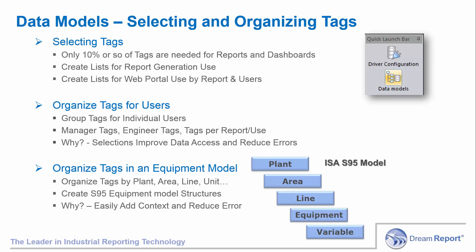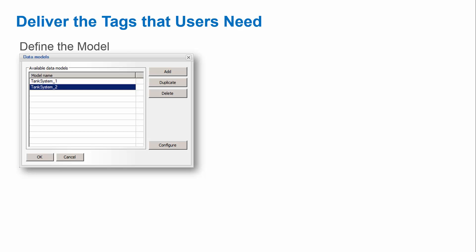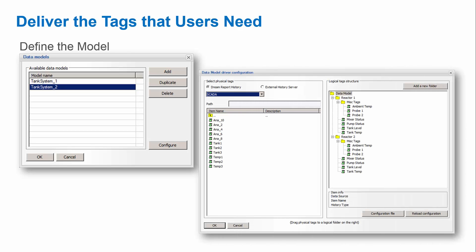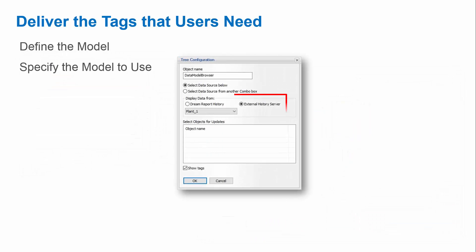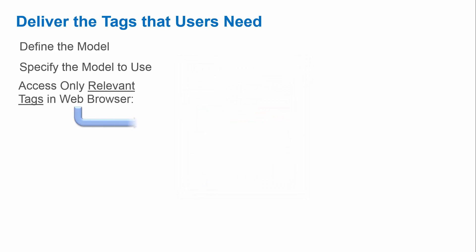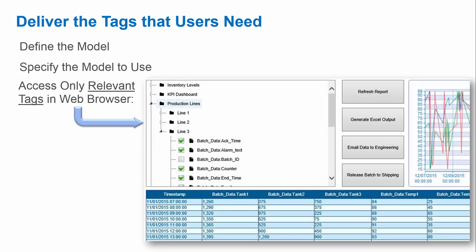The new DreamReport web objects make the web experience faster to set up and more flexible to use. In DreamReport Studio, you can define one or more data models for your users' specific needs. You create a folder structure to represent a logical organization in each model, and then simply drag and drop tags from any data source into the relevant folder or folders. The same tag can be used in multiple data models and in multiple folders. As an alternative, the model can also be created or copy and pasted in a text file, and then imported to quickly reproduce the desired tag structure. When configuring a web report layout, simply specify the data model in your tag picker instead of an individual data source. Then, on the web report, your users only need to access relevant tags quickly accessible through the logical structure you've created.